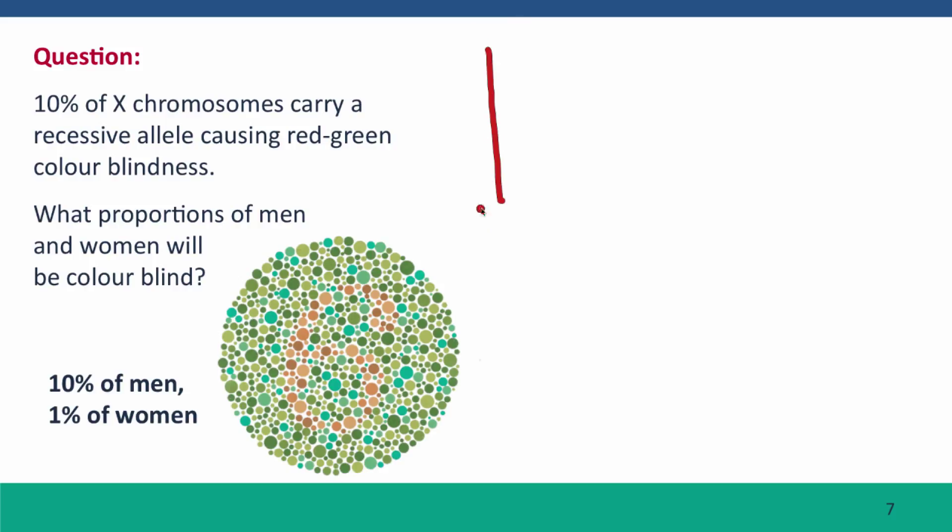This means that there's a 10% chance that this X chromosome will carry the colorblind defective allele. So men will have a 10% chance of getting the defective allele, and if they get the defective allele, they'll be colorblind because that's the only copy of the gene they have.